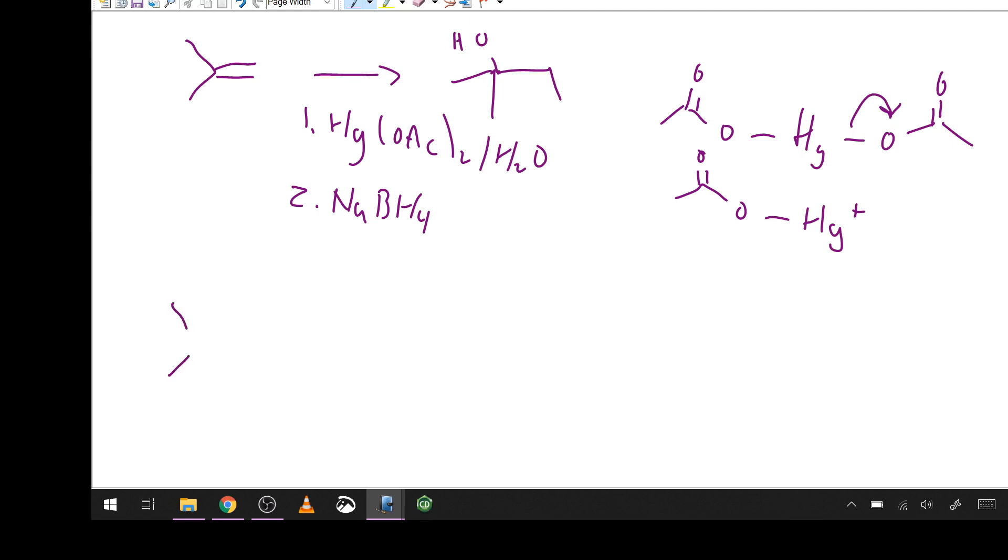So it begins like this. We have the alkene, we have the mercury in whatever state, and it has the acetate group again. So we're doing exactly the same type of thing as before. And for the exact same reason as before, we're getting a cation here.